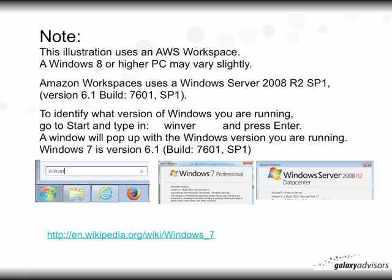This illustration uses the Amazon WorkSpaces Workspace, which is a Windows Server 2008 Revision 2 Service Pack 1 — technically version 6.1 build 7601 Service Pack 1. Note that Windows 8 or higher PCs may vary slightly. To identify what version of Windows you are running, go to Start and type WINVER, then press Enter. A window will pop up with the Windows version. Windows 7 is version 6.1, build 7601 Service Pack 1. Examples shown include Windows 7 Professional and Windows Server 2008.